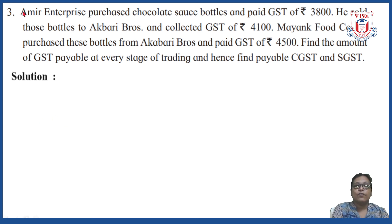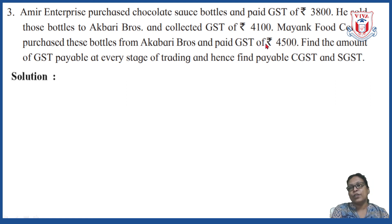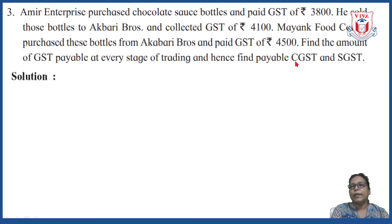The next question: Amir Enterprise purchased chocolate sauce bottles and paid GST of rupees 3,800. He sold those bottles to Akbari Brothers and collected GST of rupees 4,100 — this is the input tax credit for Amir Enterprises, and rupees 4,100 is the output tax. Mayang Food Corner purchased those bottles from Akbari Brothers and paid GST of rupees 4,500. Find the GST payable at every stage of trading and hence find CGST and SGST.